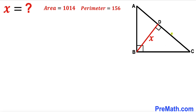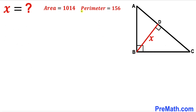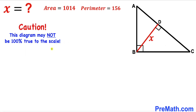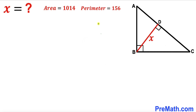Welcome to PreMath. In this video we have a right triangle ABC along with perpendicular BD, as shown in the diagram. This perpendicular BD is represented by X. The area of triangle ABC is 1014 square units and the perimeter of triangle ABC is 156 units. Our task is to find the value of X — in other words, we are going to find the length BD. Please give a thumbs up and subscribe, and keep in mind that this figure may not be 100% true to scale. Let's get started.